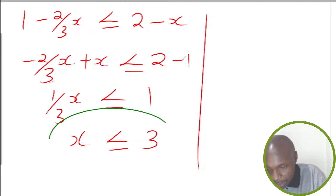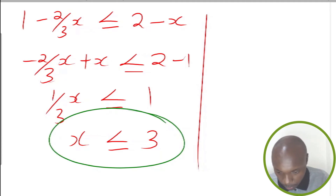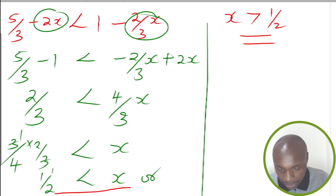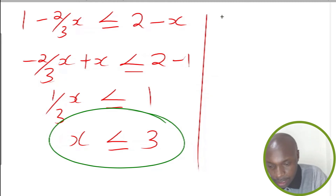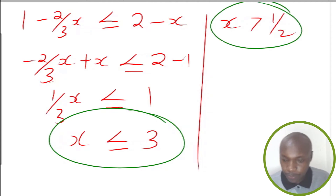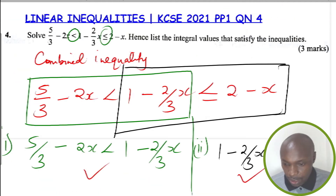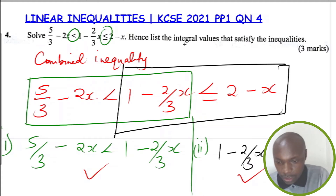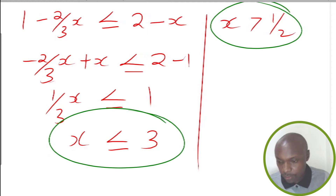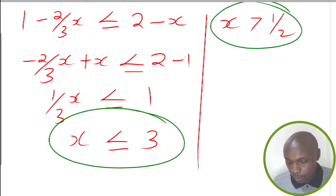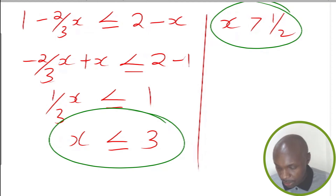These are the two solutions: x is less than or equal to 3, and x is greater than 1/2. Now let's answer the question: list the integral values that satisfy the inequalities. Integral values are whole numbers — both positive and negative integers — without fractions or decimals.